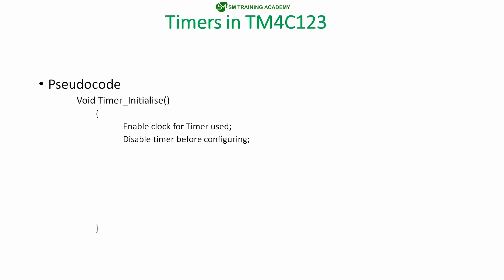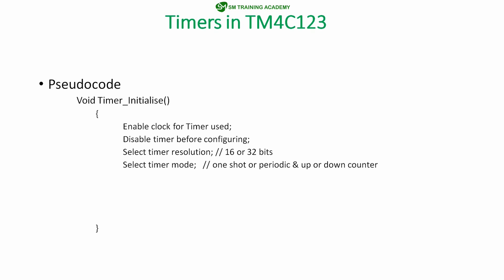The third step is to select the resolution of the timer, either 16-bit or 32-bit. The fourth step is to select the timer mode — either one-shot mode or periodic mode — and then choose whether up counter mode or down counter mode. After these configurations, we want to set the interval load register value, which defines the starting value for down counter mode or the target value for up counter mode. Then we clear the interrupt flag of the timer and enable the timer to start the timer counter.